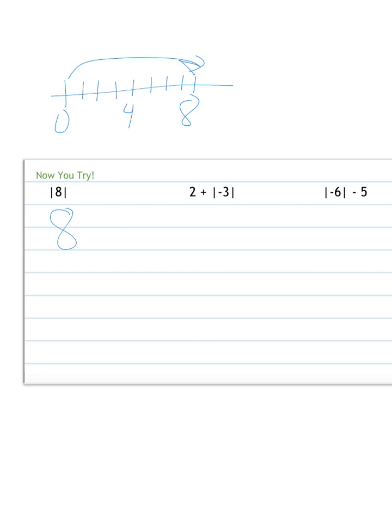Next one, now we're doing order of operations, so we have to do the absolute value first. 2 plus the absolute value of negative 3. So 2 plus, we find the absolute value of negative 3. Well, negative 3 is 3 spots away from 0. So 2 plus 3 is 5.